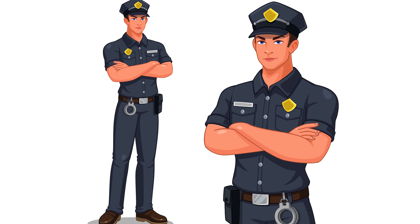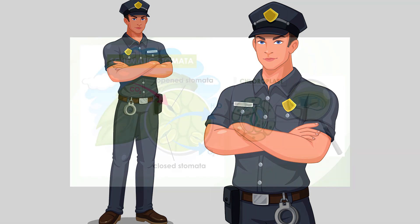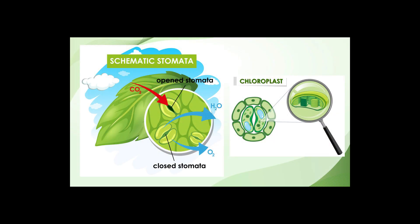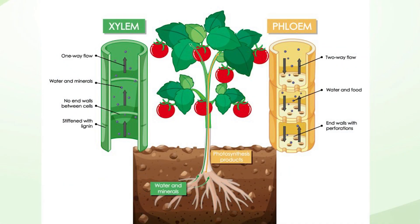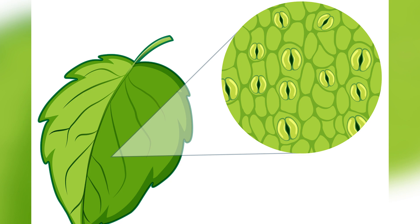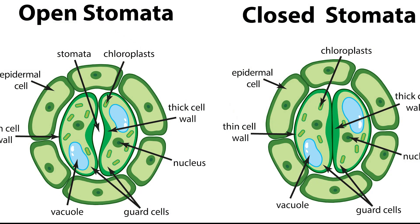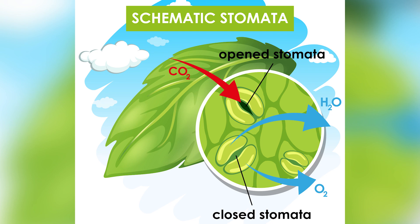Each stoma has bean-shaped cells called guard cells, which work like guards — controlling what goes in or out. Chloroplast is found in the guard cells of stomata. When a plant is watered, roots absorb the water, and through root pressure the water travels and reaches the leaf. Through veins and veinlets, the water reaches the guard cells. Once the guard cells are full with water, they bulge outward and the stomata open. Open stomata allows gas entry and exit. When the guard cells lose water, they lose their turgidity and the stomata close.